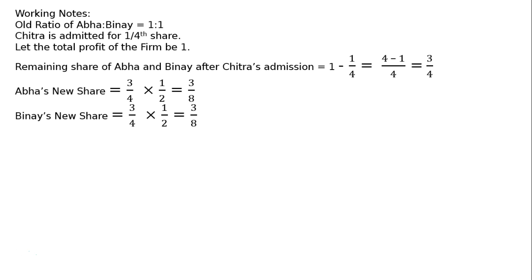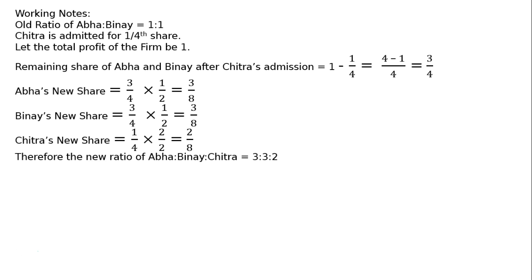Chitra's new share is 1/4. Multiply the denominator by 2 to make it 8, so the numerator becomes 2, giving 2/8. Therefore, the new ratio of Abha to Vinay to Chitra is 3:3:2.